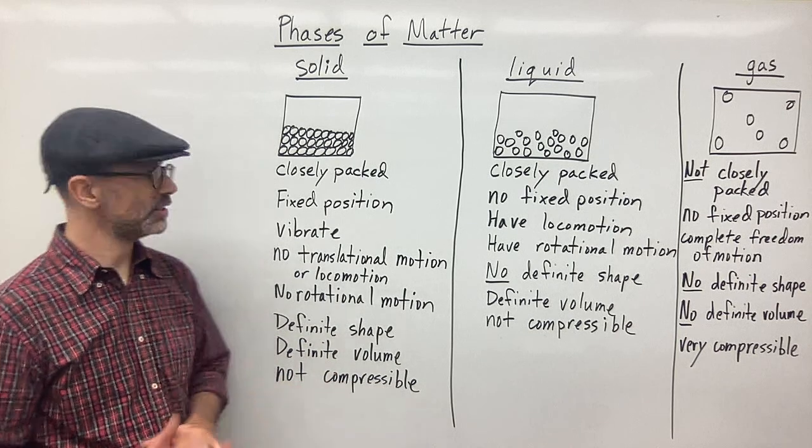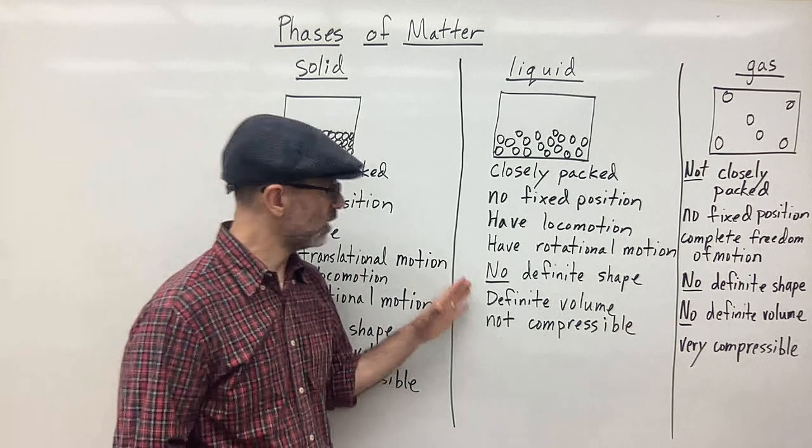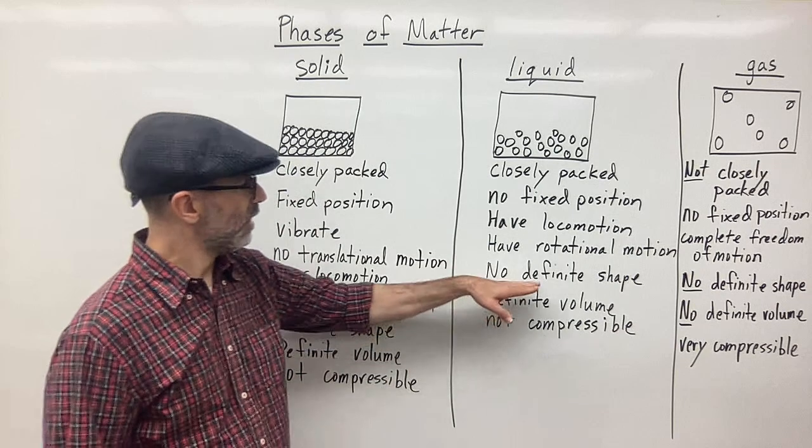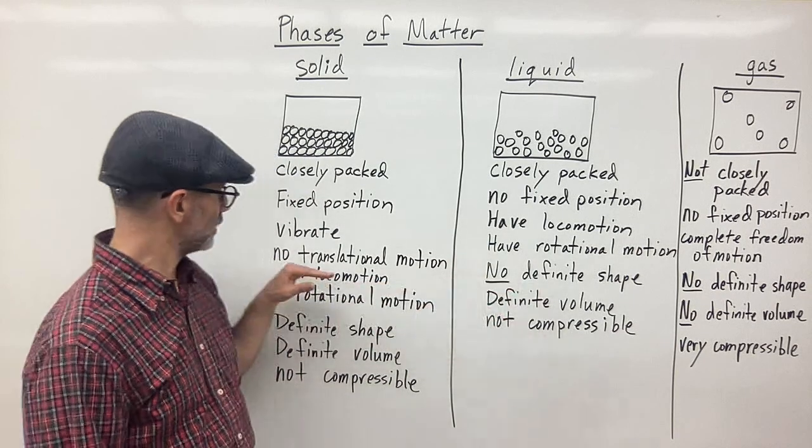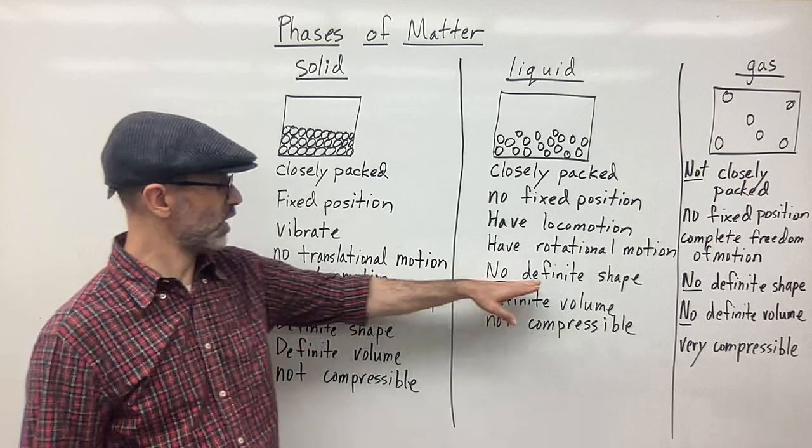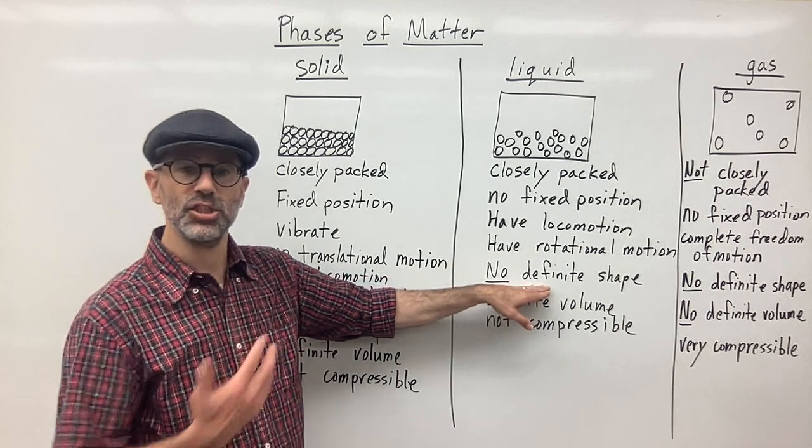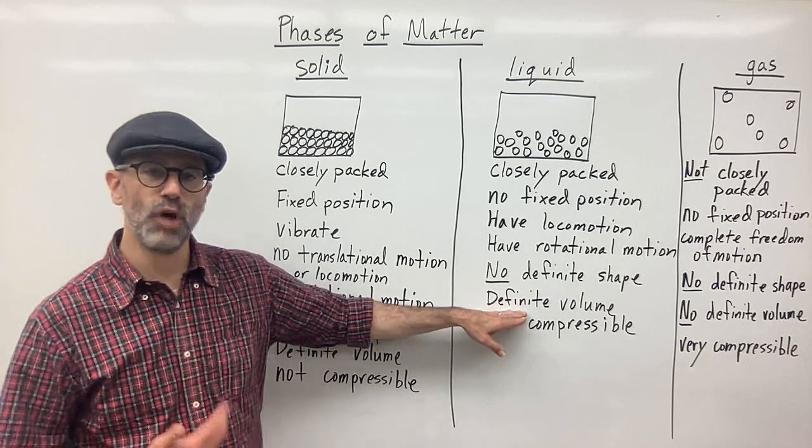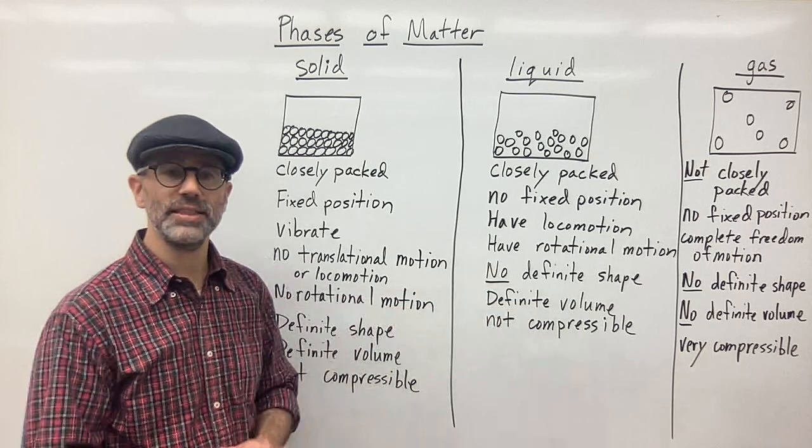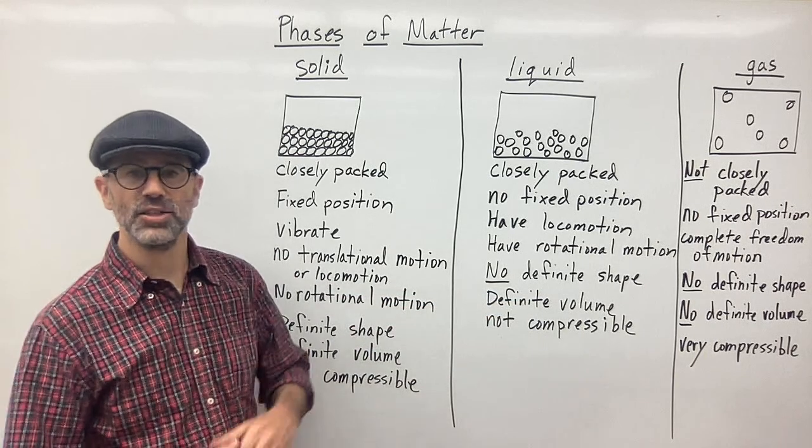Well, what about liquids? Liquids are defined by the fact that they don't have a definite shape. As opposed to having a definite shape here, the shape can change. Liquids can change shape, but they do have a definite volume. So the volume stays the same. In this case, I can take some water. I can transfer it from a graduated cylinder, a long graduated cylinder, and then I can pour that into a beaker, which is kind of short and fat.